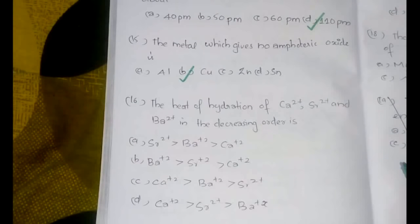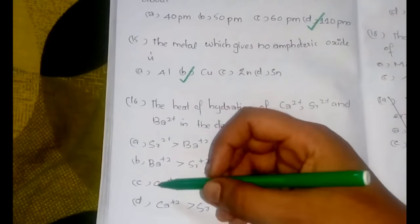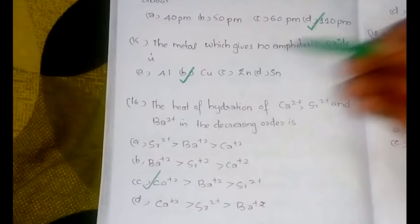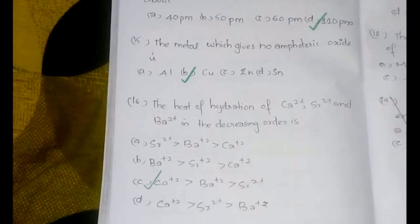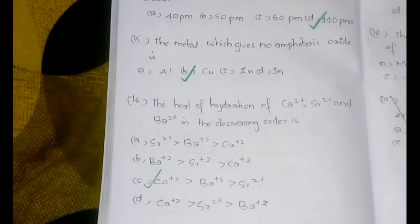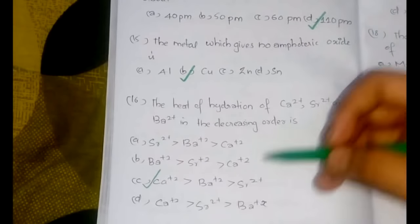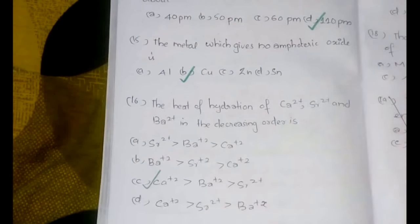The sixteenth question: the heat of hydration of Ca2+, Sr2+, and Ba2+ decreasing in the order? It is decreasing in the order Ca2+ greater than Ba2+ greater than Sr2+, according to their sizes. As size increases, the heat of hydration decreases, and that is exactly the trend seen in this sequence.